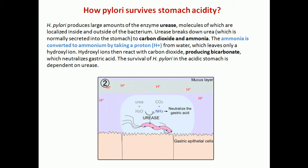The ammonia is then converted into ammonium by taking a proton, because there is a lot of water available and acids like HCl are present. So protons are very plentiful, and the ammonia is converted into ammonium.